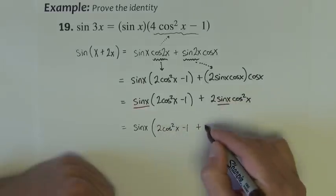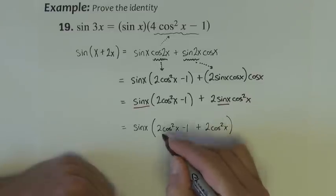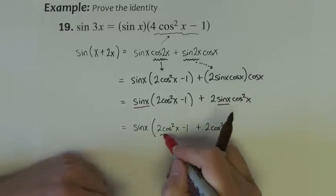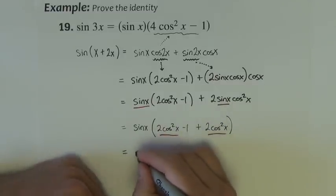And then these 2 cosine squareds are like terms, we can add them together and that will take us right to the end.